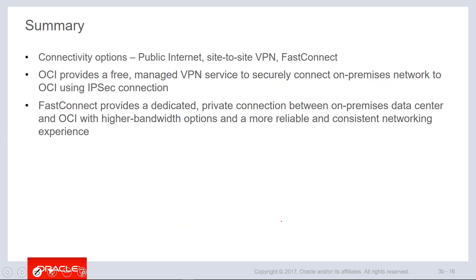In summary, we looked at the various connectivity options: public internet, site-to-site VPN, and FastConnect. OCI provides a free managed VPN service, and FastConnect provides a dedicated private connection between on-premises data centers and OCI with higher bandwidth options and a more reliable, more consistent networking experience.